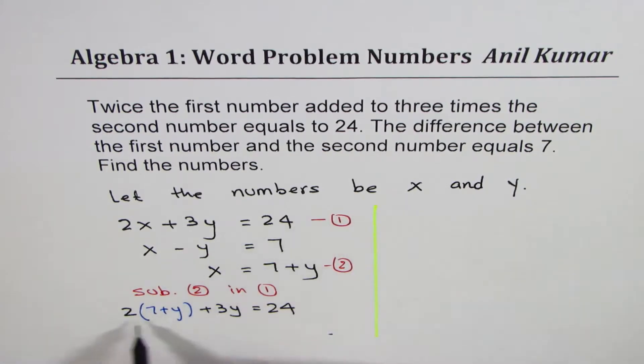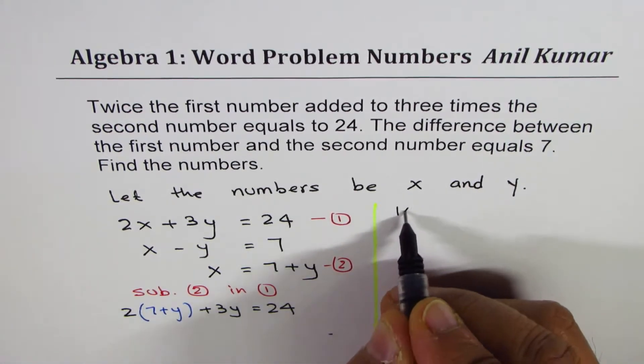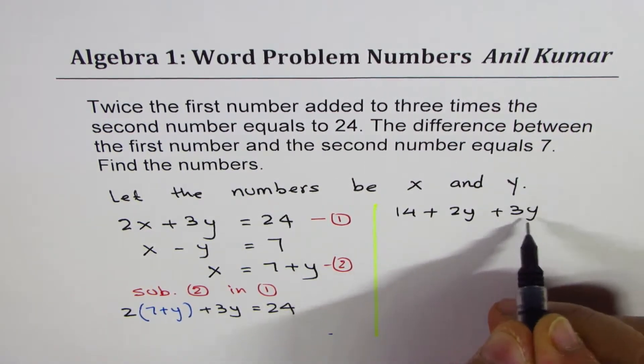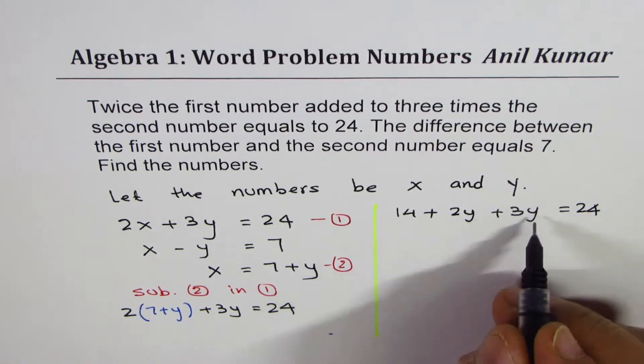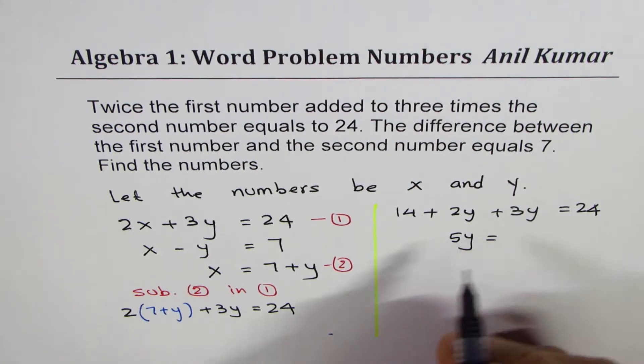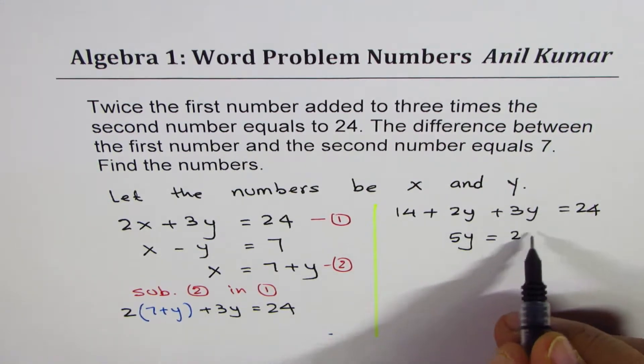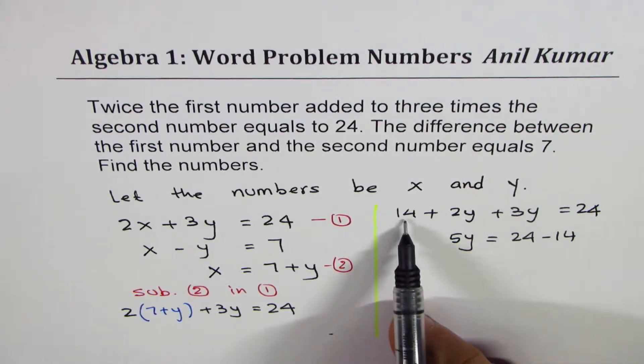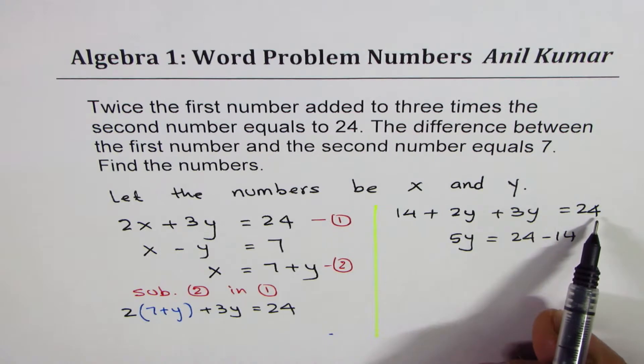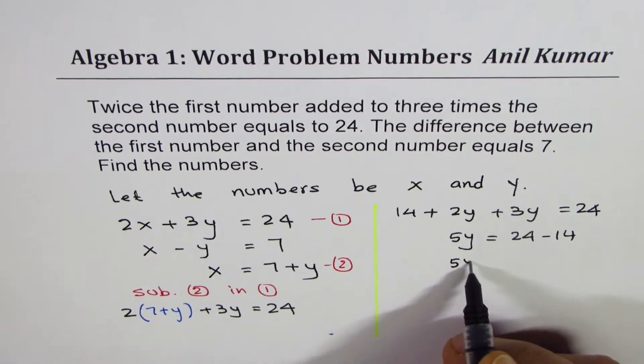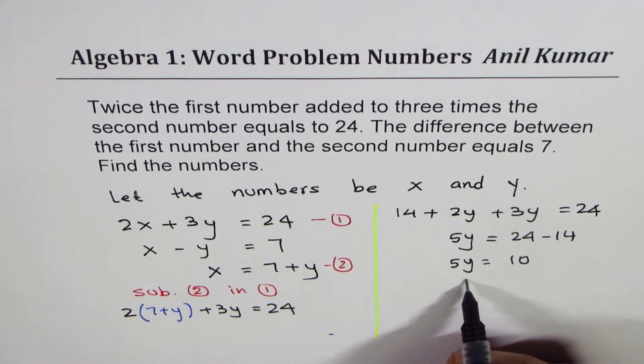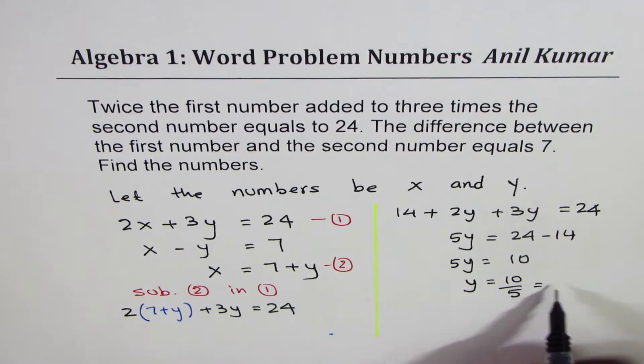So we'll open the brackets. We get two times seven as 14 plus 2y plus 3y equals to 24. Combine the like terms. 2y plus 3y is 5y. Take away 14 from both sides, 24 minus 14. So we could write this as 5y equals to 10. Divide both sides by five. So we get y equals to 10 divided by 5, which is two.